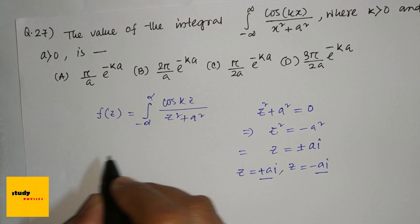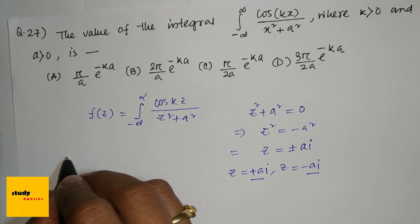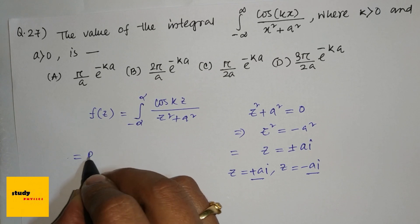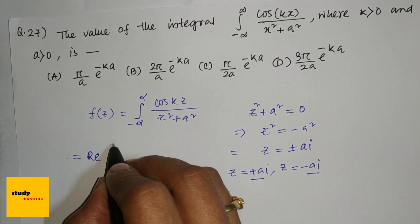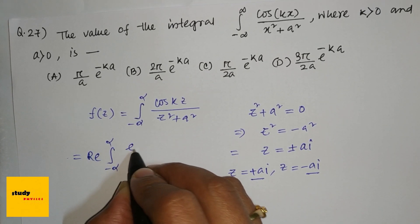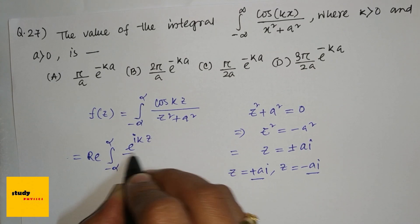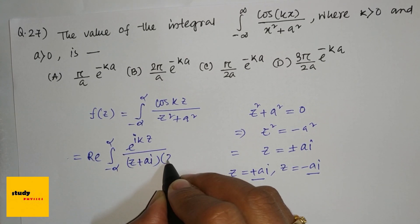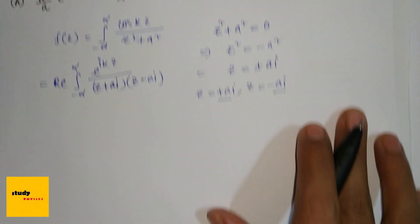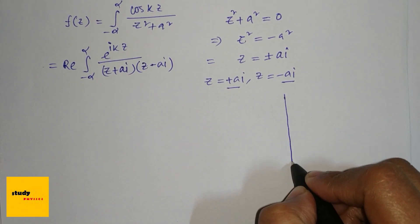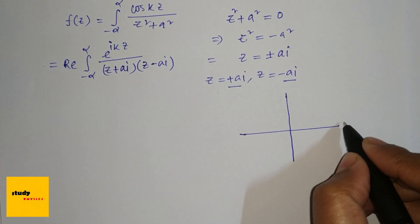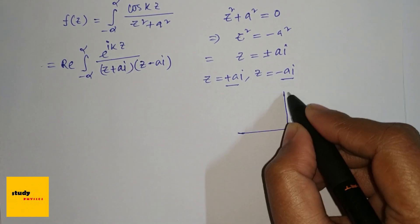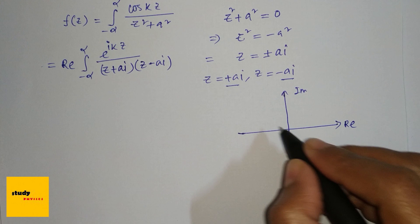Now, cos is the real part of e^(ikz), so this equals the real part of the integral from minus infinity to infinity of e^(ikz)/[(z + ai)(z - ai)]. If we draw the contour, this is the real axis and this is the imaginary axis.